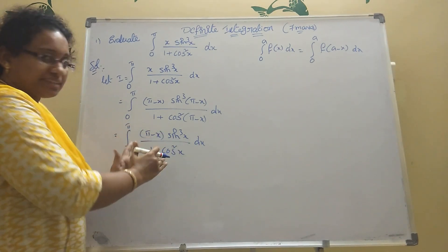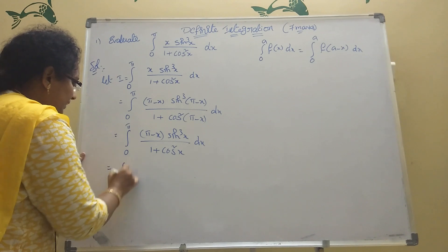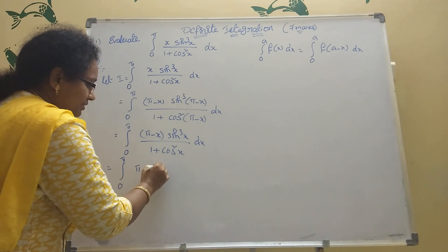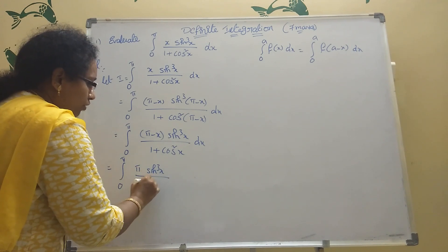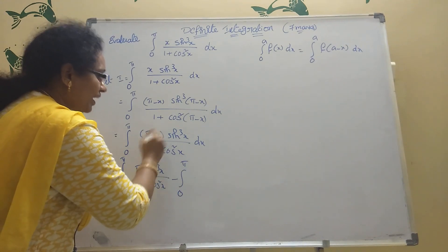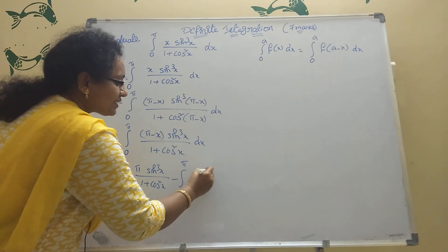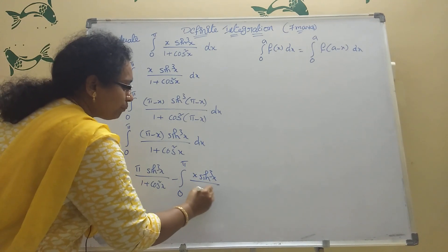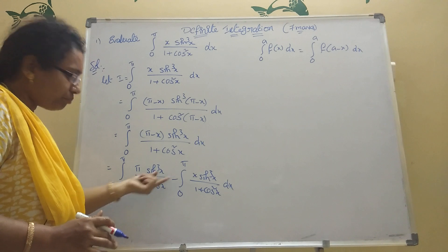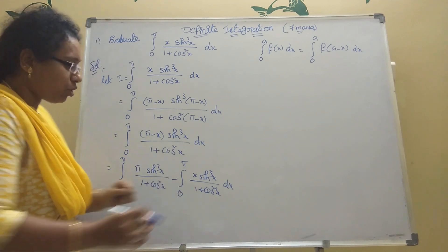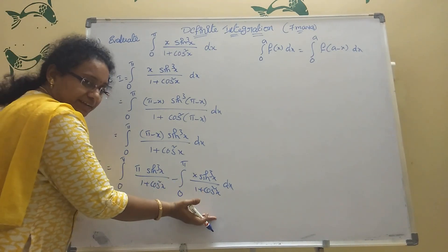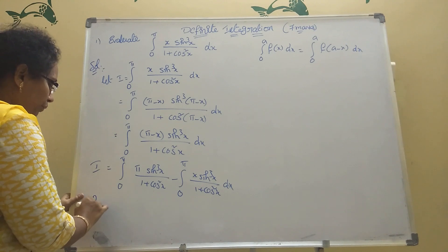Now spread into two parts: integration of 0 to π of π·sin³x / (1 + cos²x) dx minus integration of 0 to π of x·sin³x / (1 + cos²x) dx. That second part is I itself. So move the −I to the left side: 2I equals integration of 0 to π of π·sin³x / (1 + cos²x) dx.